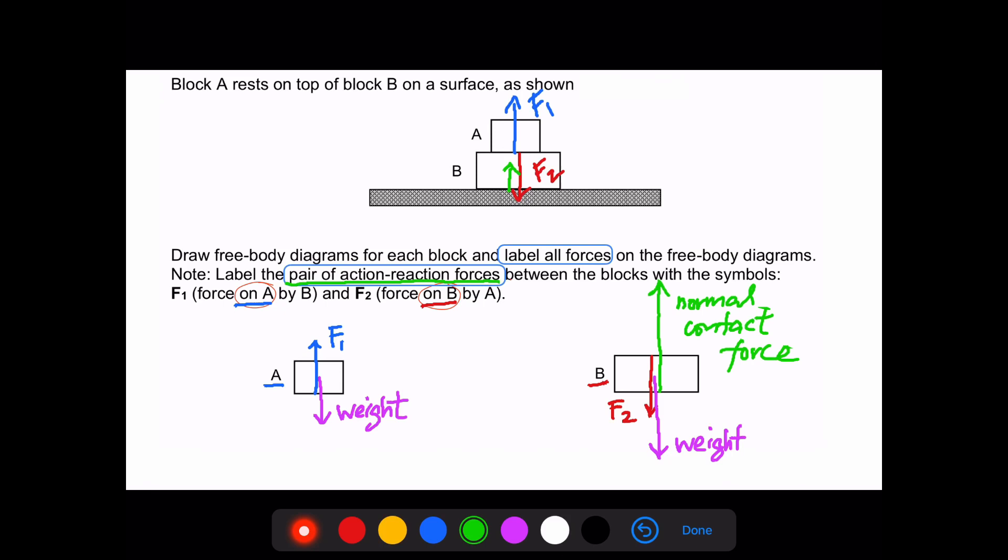So we label the forces in full, and when we draw the length of the arrows, we take into account which forces are larger and which forces are smaller. For B, the upward force, the normal contact force, must balance the downward forces, F2 plus the weight. And that's it for the free body diagrams.